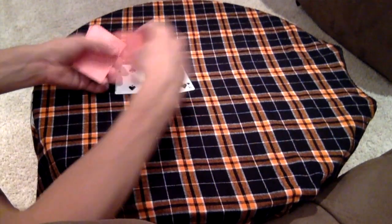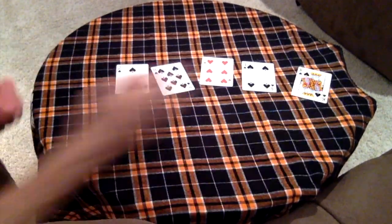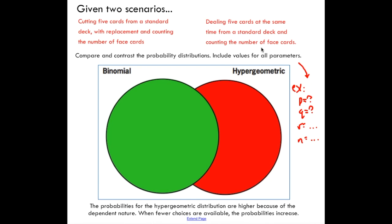Second scenario, very similar sounding, except we're dealing five cards at the same time from a standard deck and counting the number of face cards. So we're counting face cards in both situations. In the first situation, we are replacing the cards each time. In the second situation, we are not replacing the card.